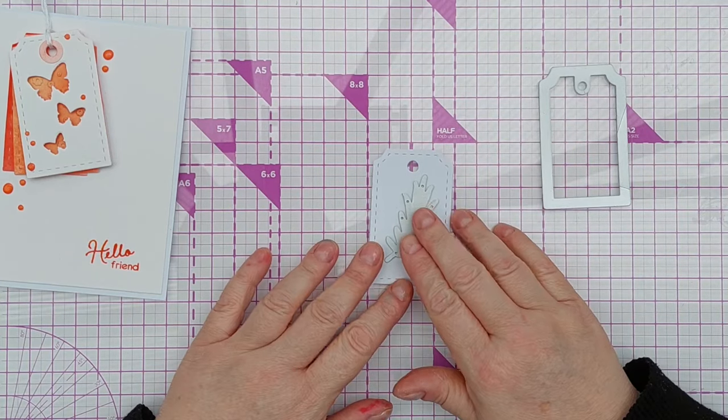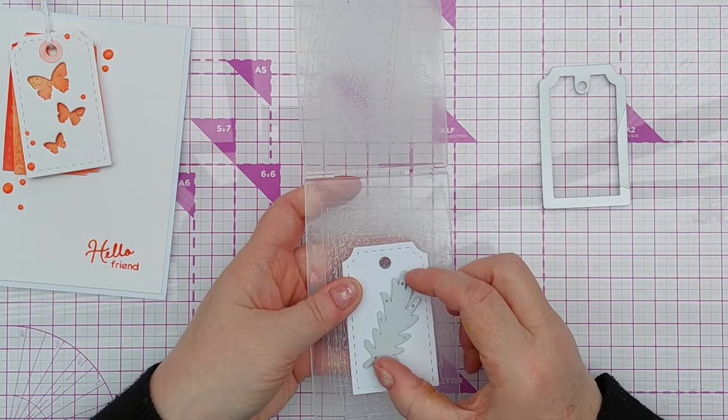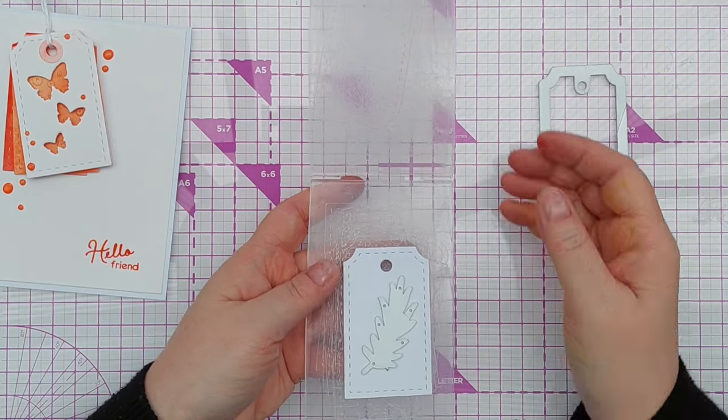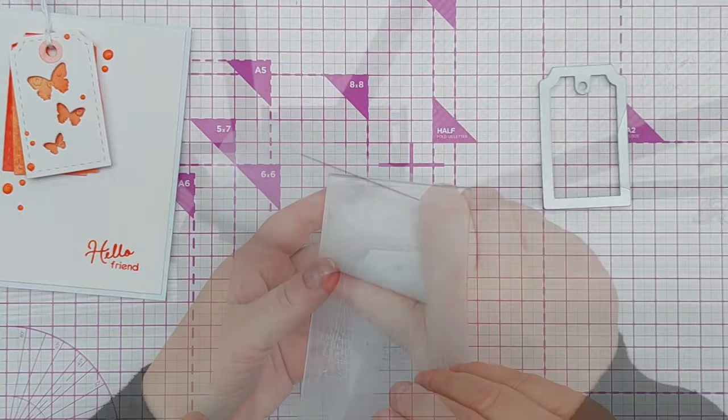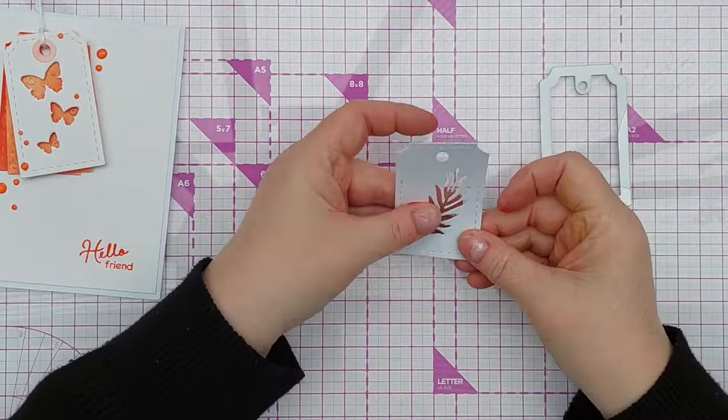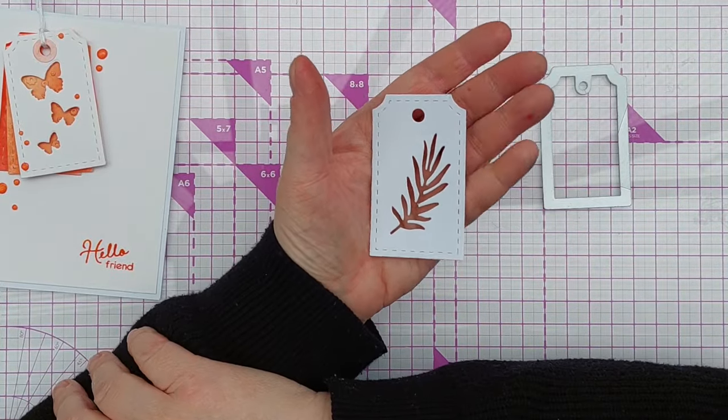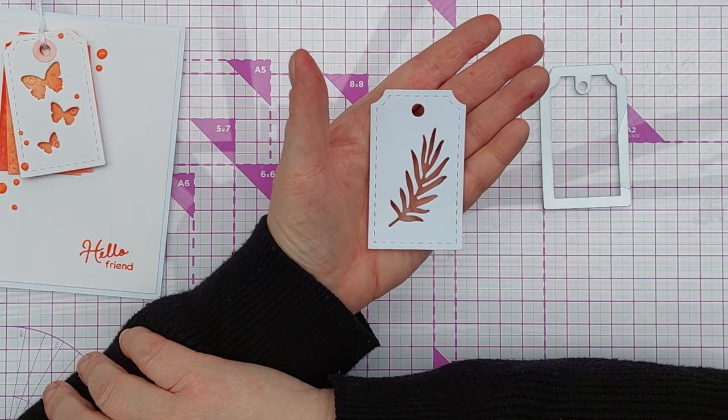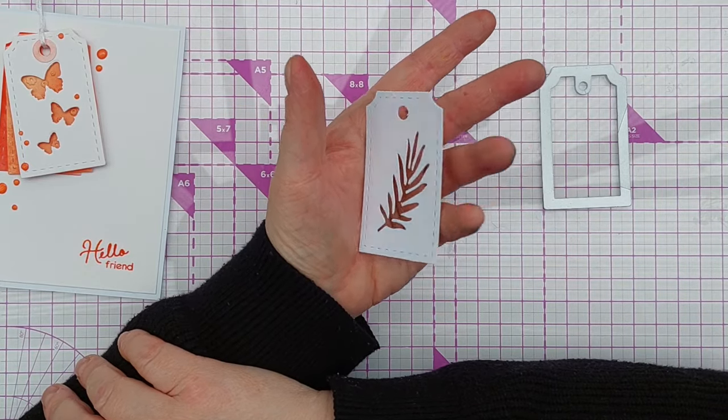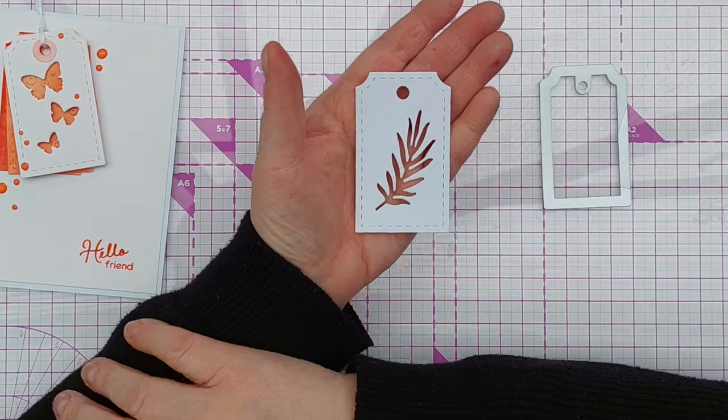I just want to get that lined up in an aesthetically pleasing way. There we go, now we've got an aperture in our die cut. Obviously you can cut anything out of your die cuts - hearts, stars, butterflies, flowers, leaves, letters, whatever you want.